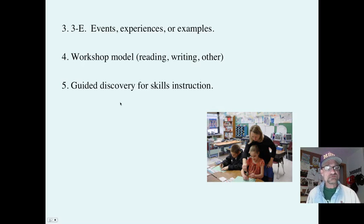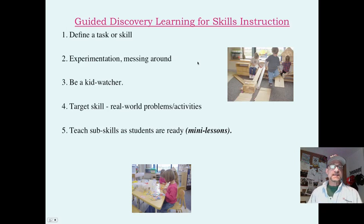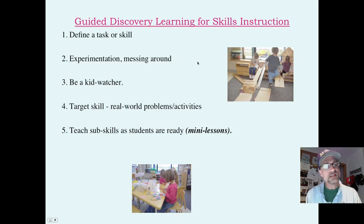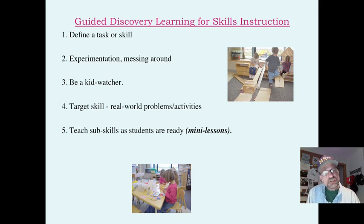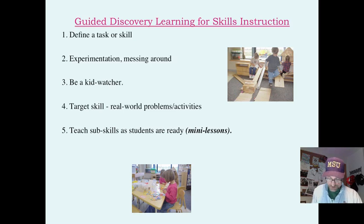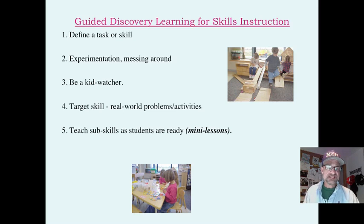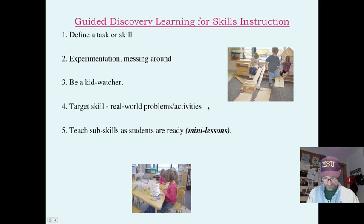The next one is guided discovery for skills instruction. Adopt and adapt. First, you define a skill — what do you want students to learn? Next, you allow time and materials for them to experiment, to mess around. Third, you are a kid watcher — you're watching and observing. Fourth, you look for real-world problems or activities that utilize that skill, and use successive approximation — you don't expect students to have the skill perfectly the first time. Number five, you teach the sub-skills as students are ready for them in mini lessons.